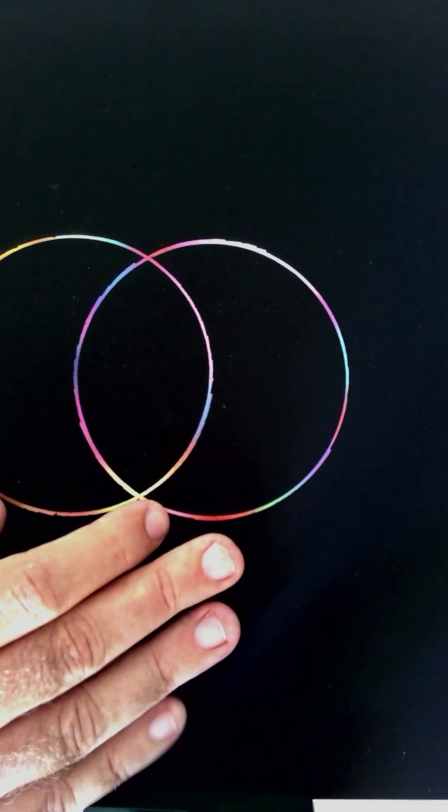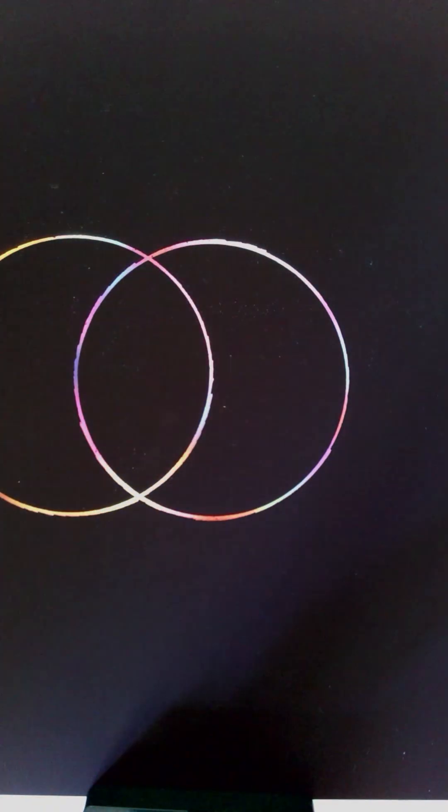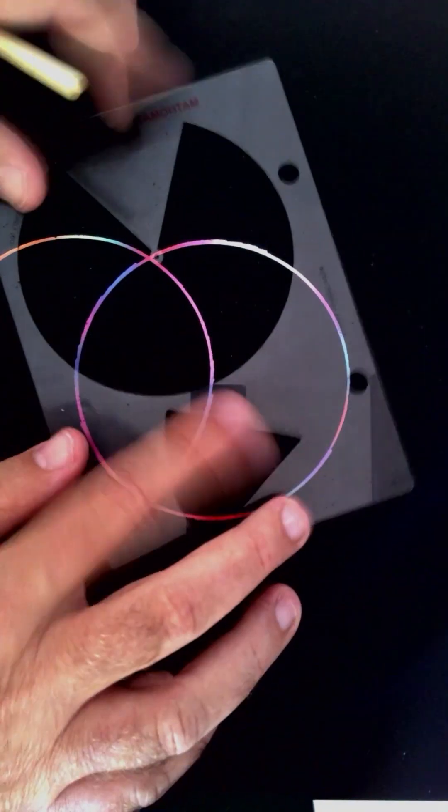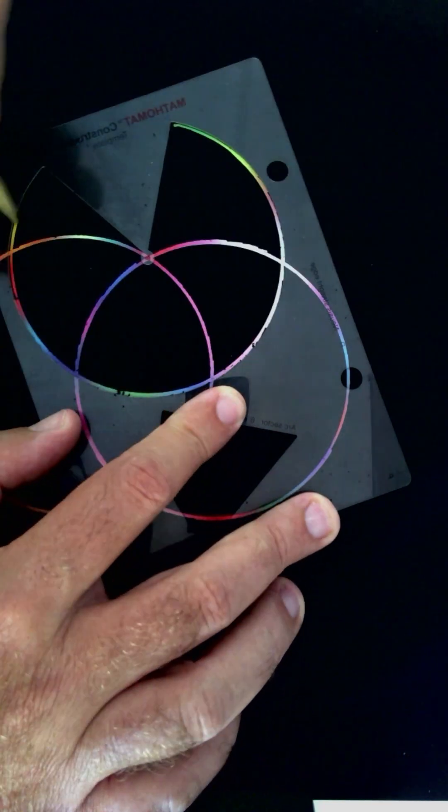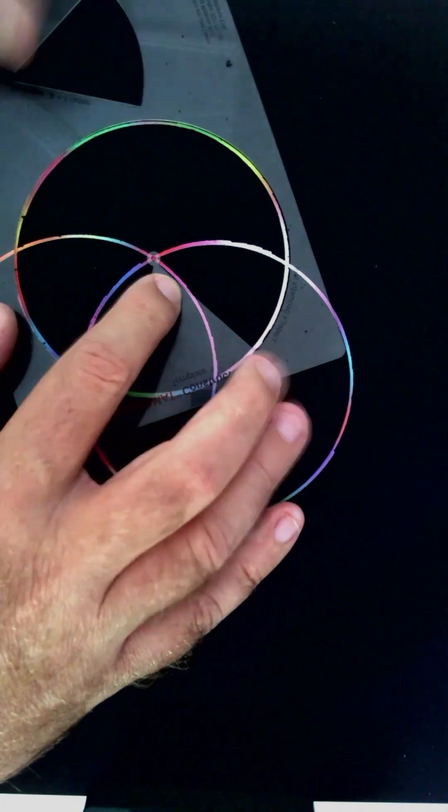Start by placing your paper on a flat surface. Set the compass so the point is steady and doesn't slide. Lightly draw a clean circle. This circle will be the foundation of our mandala, so keep the pressure gentle. You can always darken lines later.